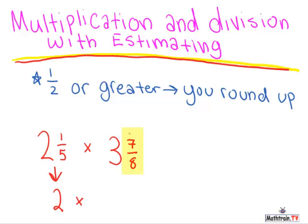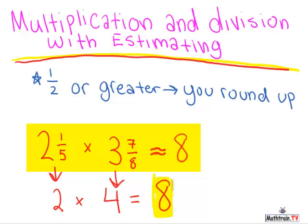Now you take 3 and 7 eighths. Half of 8 is 4, and 7 is larger than that, so you change that to 4. Then it's easy: 2 times 4, and that equals 8. So that's one example. Your answer for this problem would be approximately 8.